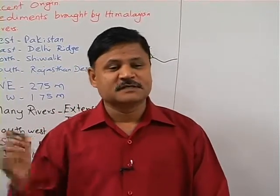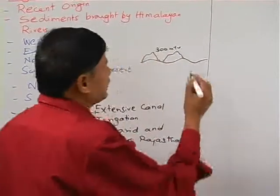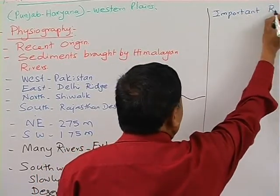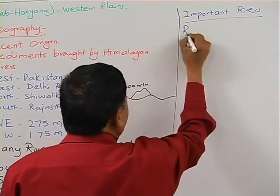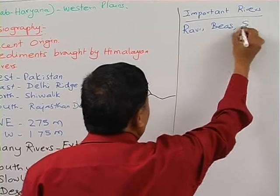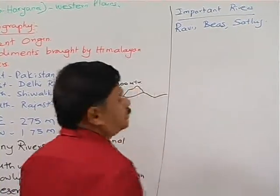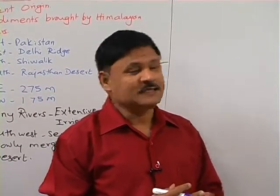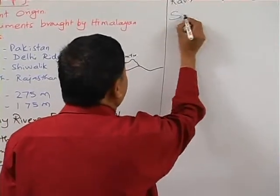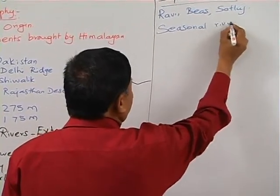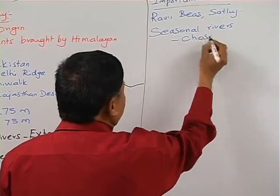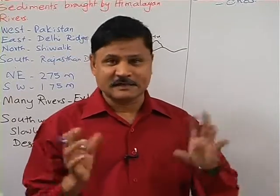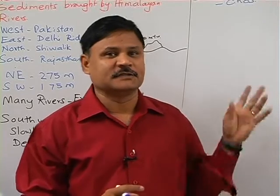The important rivers on the northern side are Ravi, Beas, and Sutlej. There are also some seasonal rivers in this region called Chos. They are only present during the rainy season — at other times they dry up — but during the rainy season they cause floods.